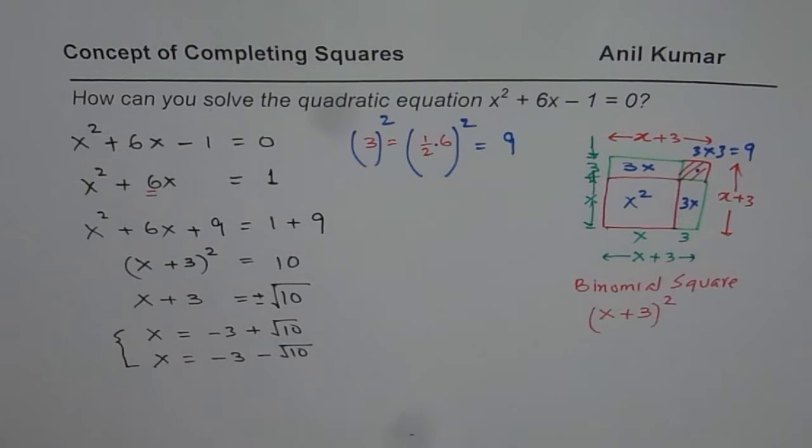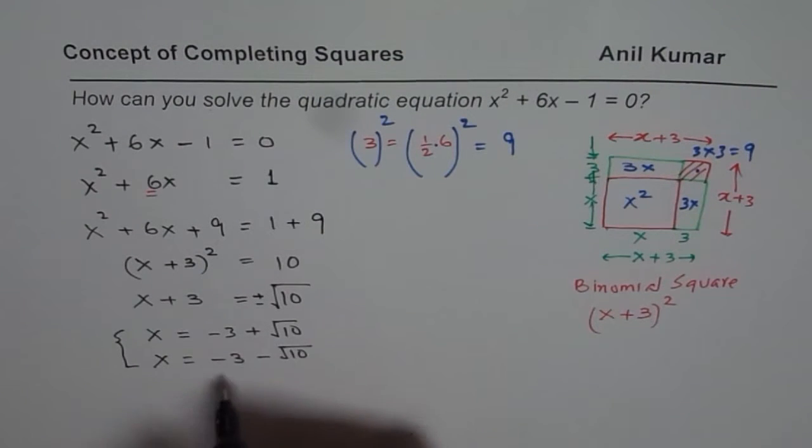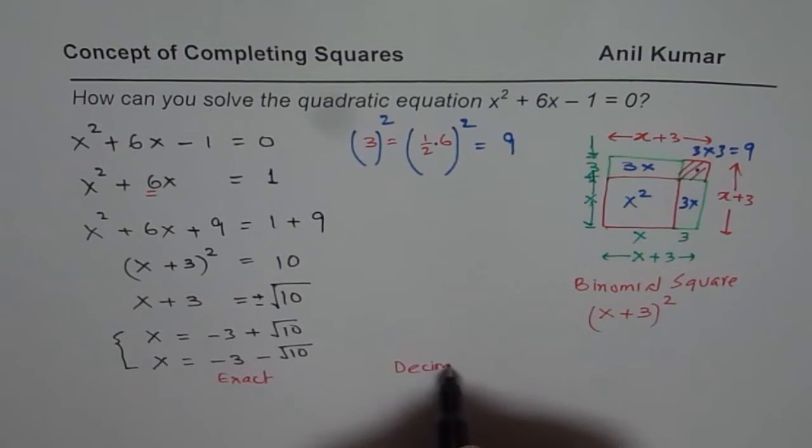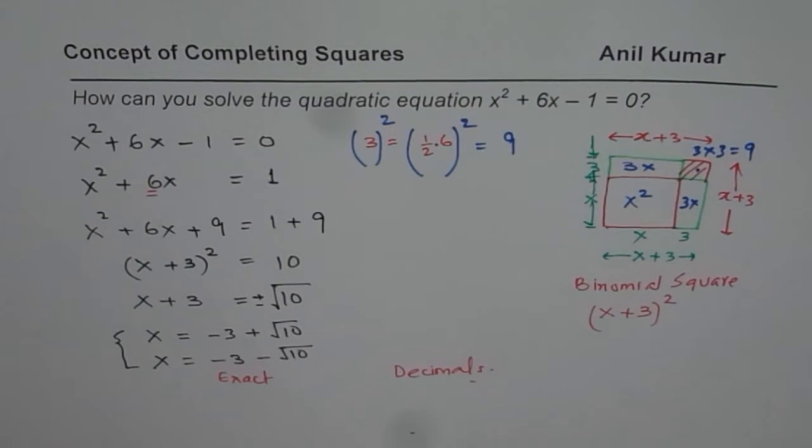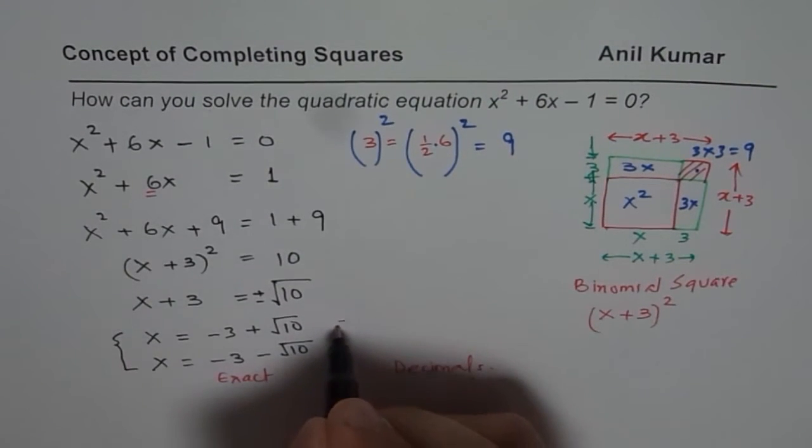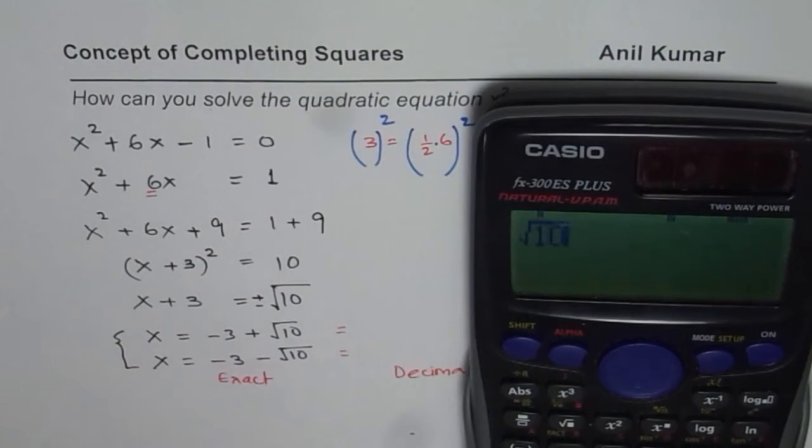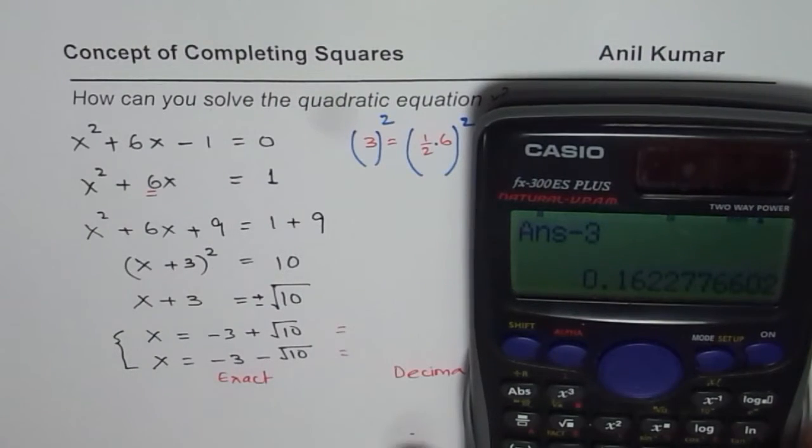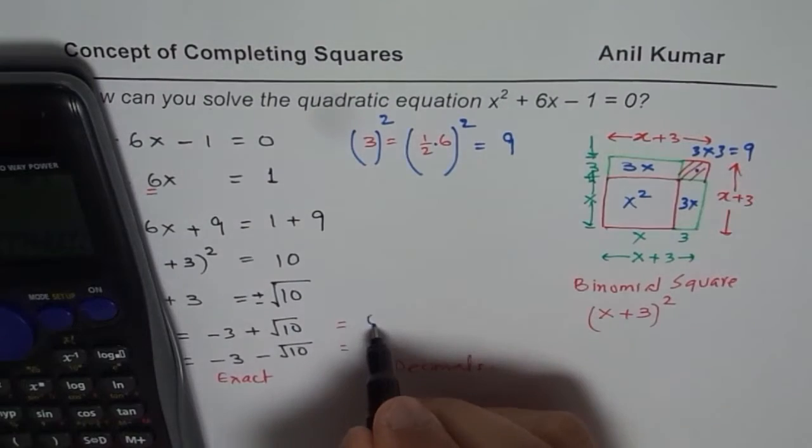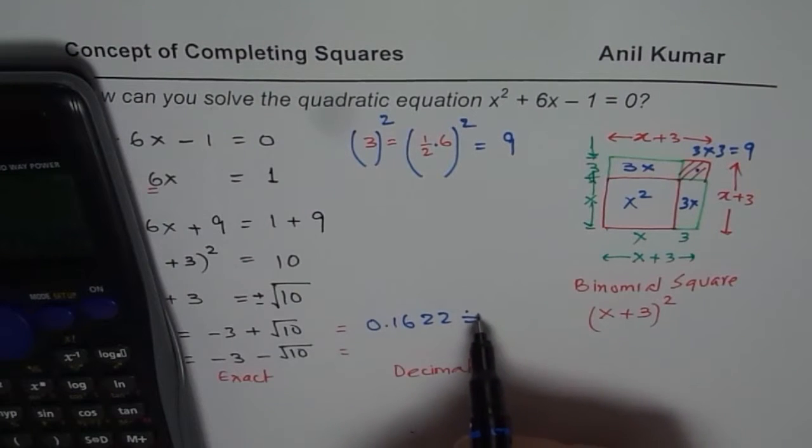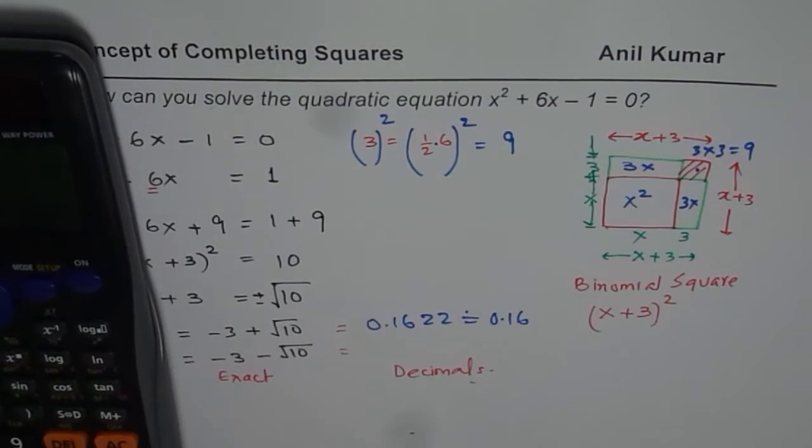That value which I have shown here is exact solution. This is what we say is exact value. We could also write it in decimals. To write it in decimals, you can use calculator. Let me do it in decimals also. Square root of 10 minus 3 equals to, in decimals, 0.1622. You get 0.1622, which we could round to two or three places. If we are rounding to two places, it will be 0.16.